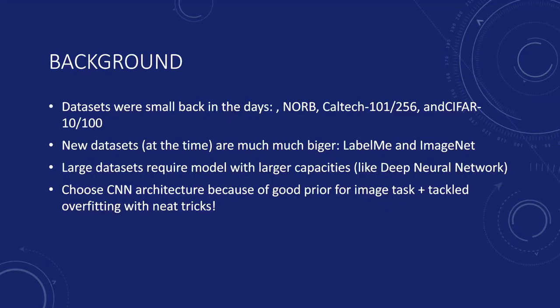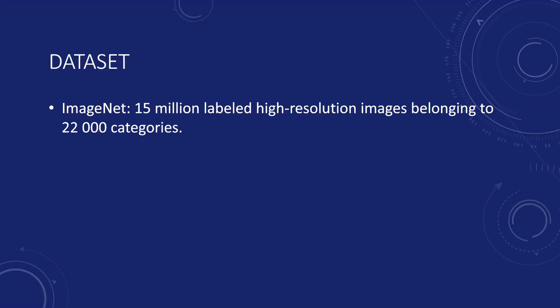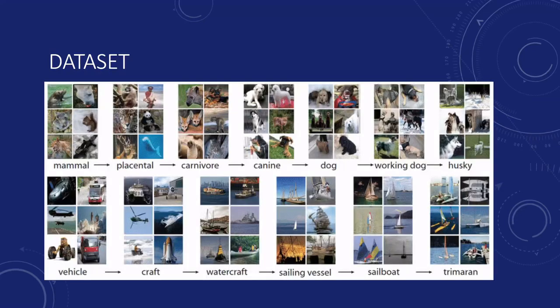So having datasets that big require a model with large capacities like Deep Neural Networks. And convolutional neural networks are especially well suited for this image recognition task because of the assumptions built in the network that resemble the visual system of the human brain. If we take a closer look at ImageNet, we see that it has in total 15 million images with label. This was an enormous amount at the time.